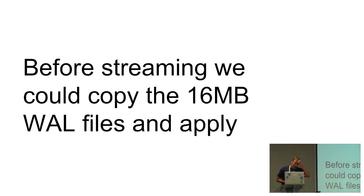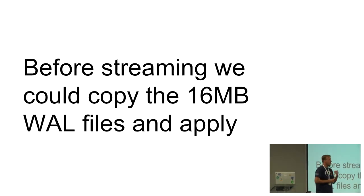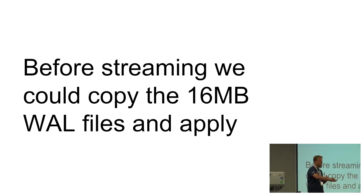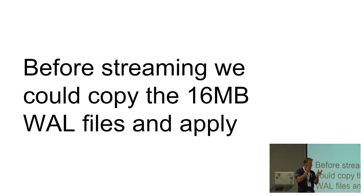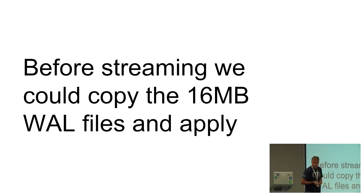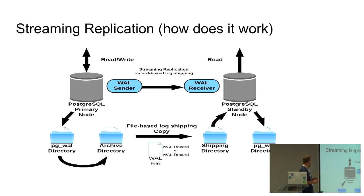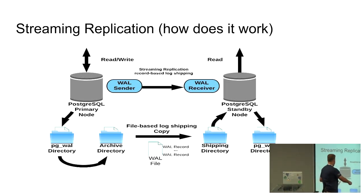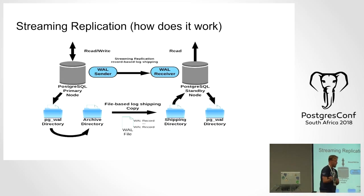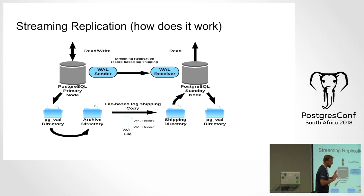Many years ago, WAL files — they're 16 MB — would get rotated: write one 16 MB file then move to the next. There's a nice archive command in your Postgres setup where you can tell it to copy those files somewhere, and that was what streaming replication was many years ago — 16 MB at a time. Not great, but better than nothing. The newer method is: as those blocks get written they get fetched by the slave, like a pipe pushing data down.